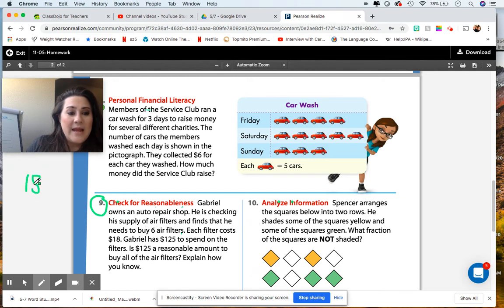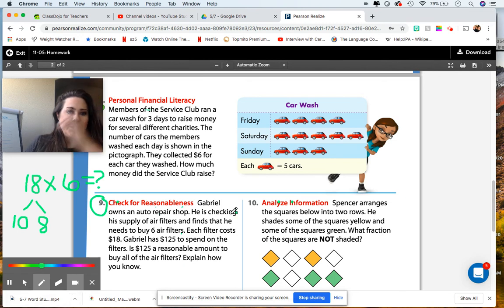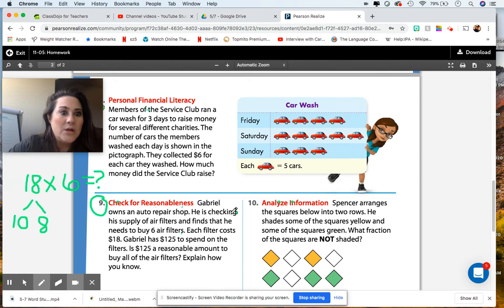You need 18 times 6. Use partial products if you need to, to solve this problem. We have 18 because each filter costs $18 and he's buying six, which is why we are multiplying those two numbers. You need to figure out what the product is to determine if $125 is a reasonable amount. Is he going to need more than $125? Because if he does, then that's not a reasonable amount. If it comes to less than that, then I'd say $125 is reasonable. But I want to see your work. I know that your parents have learned how to do multiplication different than how we are teaching it now. That's okay. But know that we still have to do partial products because that's going to come in handy in fourth grade.